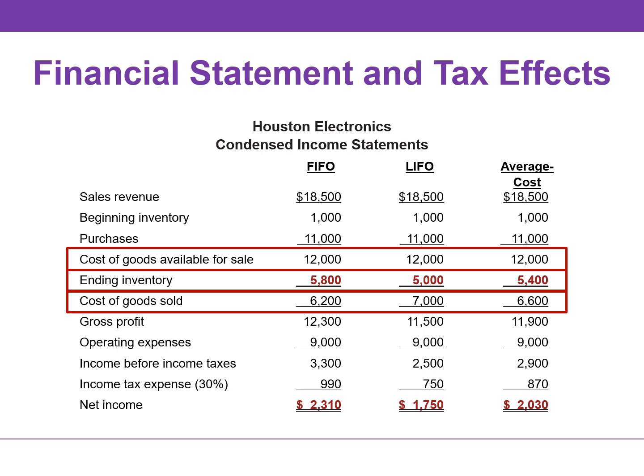Each dollar of difference in ending inventory results in a corresponding difference in cost of goods sold as well as income before income taxes. In this example, an $800 difference exists between FIFO and LIFO ending inventory, cost of goods sold, and income before income taxes.